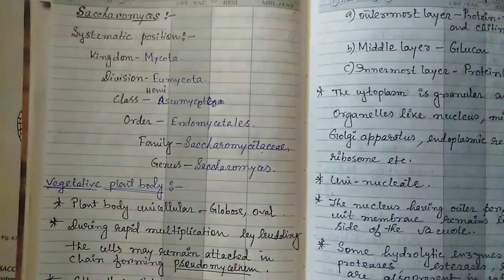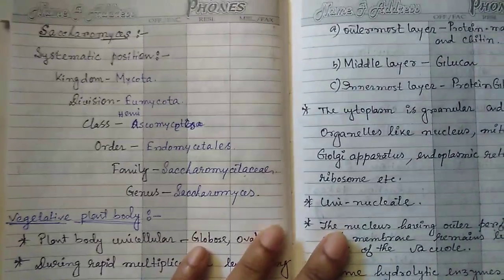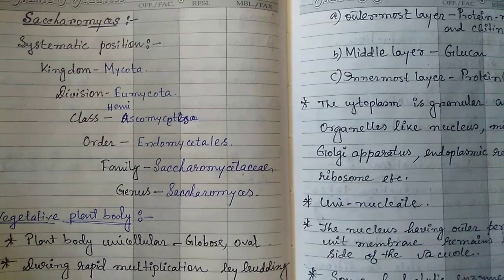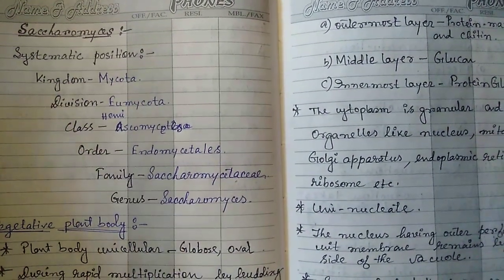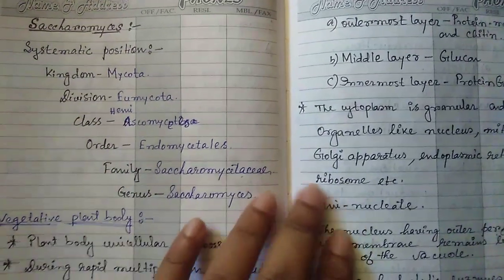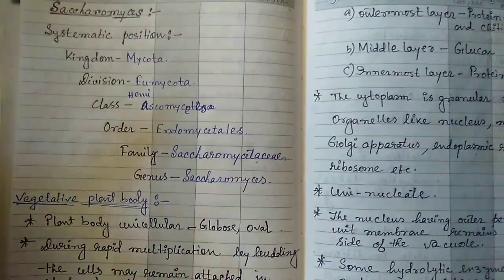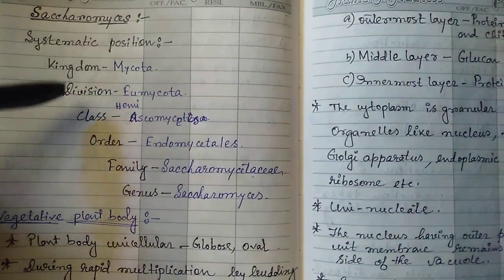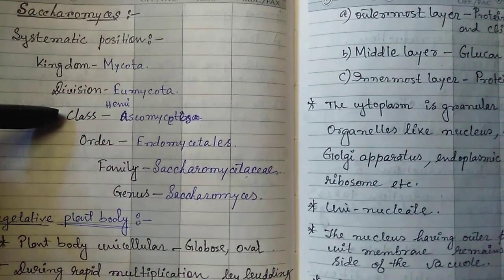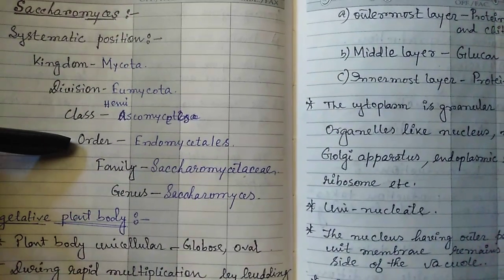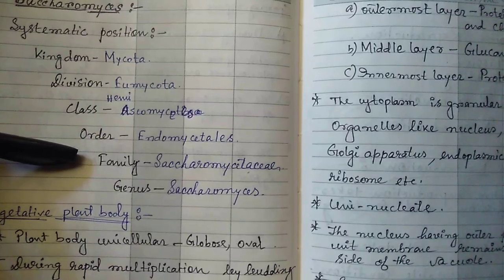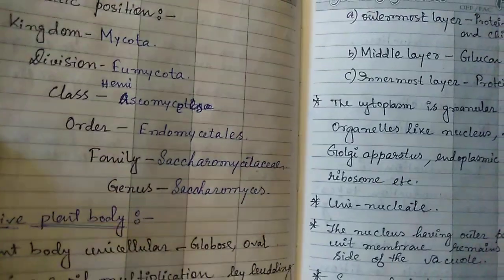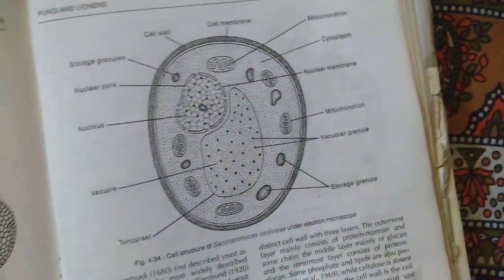Today I am going to discuss a new topic: Saccharomyces. In this video I will discuss the somatic structure of this fungi and its reproduction methods. The systematic position of Saccharomyces according to Ainsworth is: Kingdom Mycota, Division Eumycota, Class Hemiascomycetes, Order Endomycetales, Family Saccharomycetaceae, and Genus Saccharomyces.